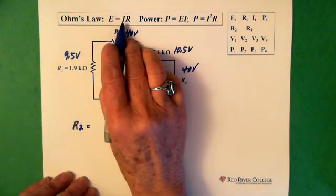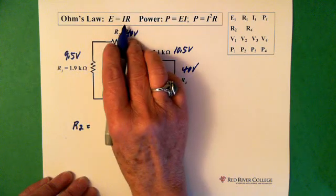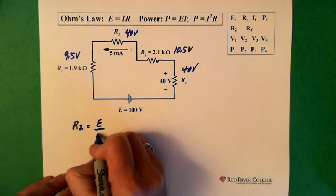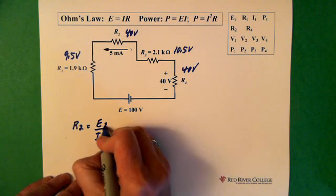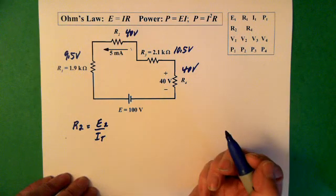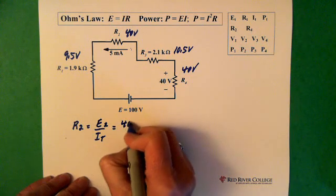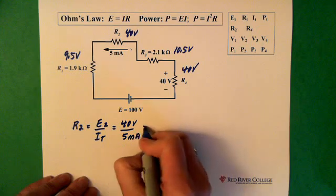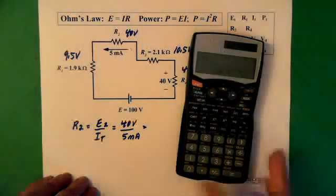We're solving for our resistance, so we're going to divide both sides here by I, a current. So we have R equals E over I. Now this is total current, and this is the voltage across resistor 2, which happens to be 40 volts. So we have 40 volts divided by 5 milliamps. So then 40 divided by our current in memory.